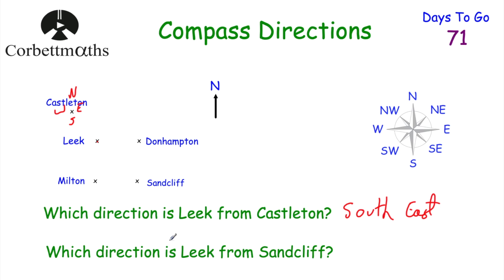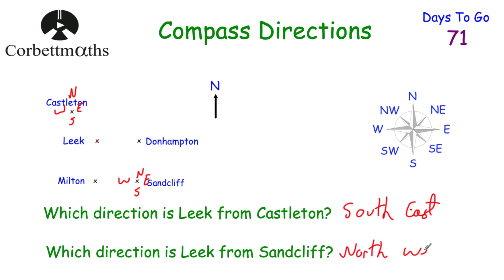The next question: which direction is Leake from Sandcliffe? This time we're at Sandcliffe. We've got north, east, south, and west. Leake is in between north and west, so that would be northwest. If you got those right, well done.